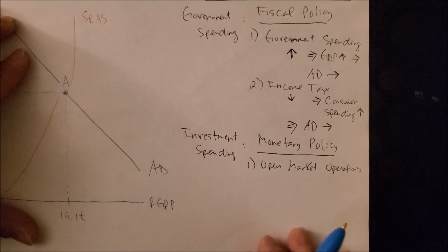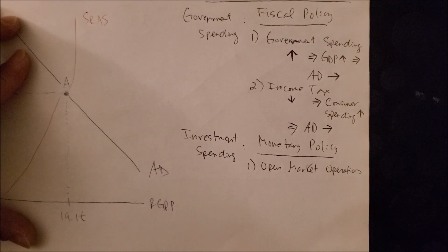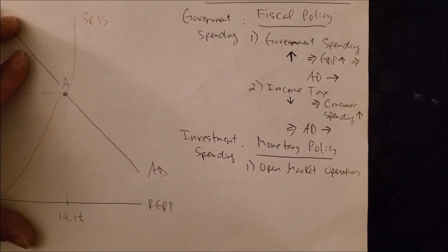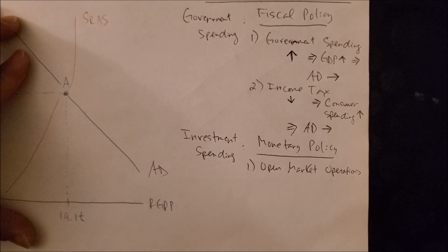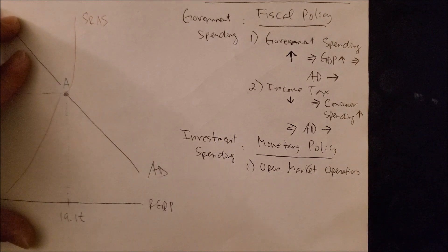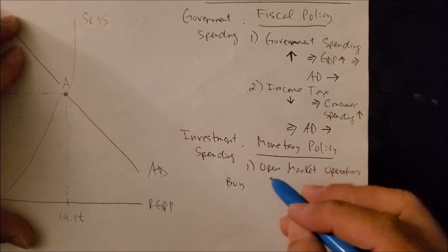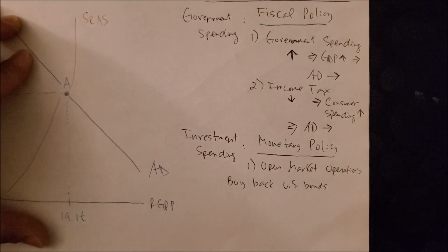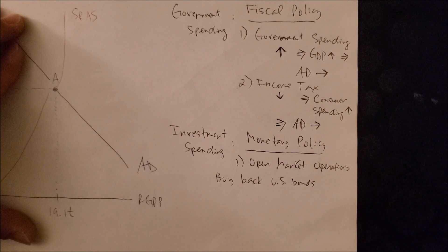The first tool is open market operations — the buying and selling of U.S. Treasuries. U.S. Treasuries are government debt: the government takes money today and promises to pay the holder at a future date plus interest. Types of treasuries include short-term bills, medium-term notes, and long-term bonds. If the Fed wants to stimulate the economy, it can buy back U.S. bonds from bondholders.